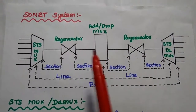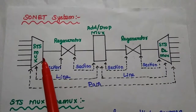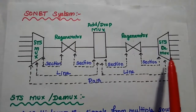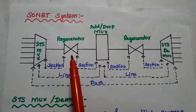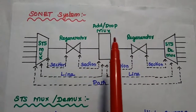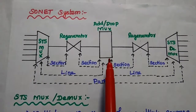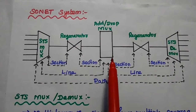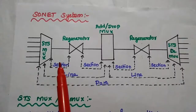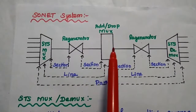In the basic structure of the SONET system, an STS multiplexer is used to multiplex signals from multiple sources into a single synchronous transport signal. At the other end, an STS demultiplexer is used to demultiplex the STS signal into different destination signals. Regenerators are mainly used to strengthen (boost) the optical signal. A section is a link connecting adjacent network elements like regenerators — for example, mux to regenerator, or regenerator to add/drop multiplexer.